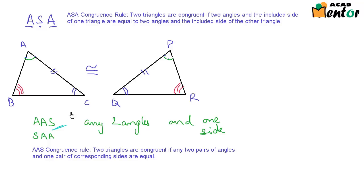I hope these conditions are clear to you. In the coming videos, we will also look at other conditions useful for finding if two triangles are congruent. Once two triangles are congruent, we can equate their corresponding parts. Happy learning.